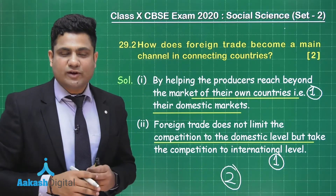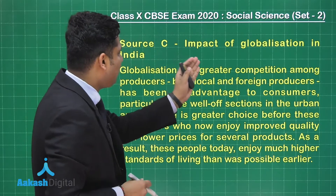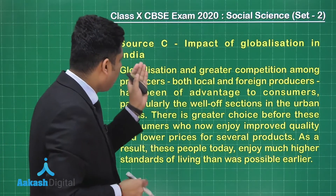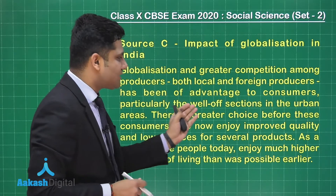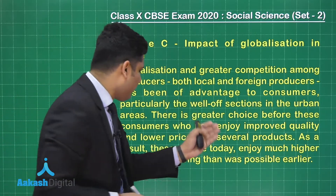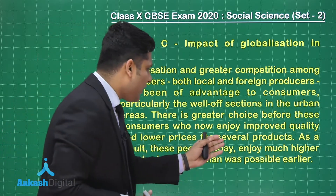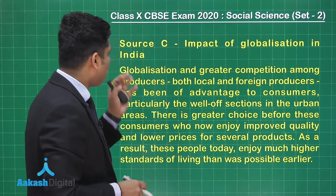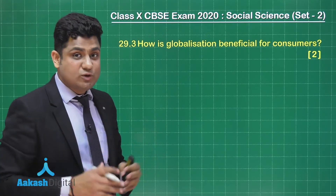Let's move to the question based on source C. Source C is all about the impact of globalization in India. It says globalization and greater competition among producers, both local and foreign producers, has been of advantage to consumers, particularly the well-off section in urban areas. There is a greater choice before these consumers who now enjoy improved quality and lower prices for several products. As a result, these people today enjoy much higher standards of living than was possible earlier. The question is: how is globalization beneficial for consumers? This question is for two marks.